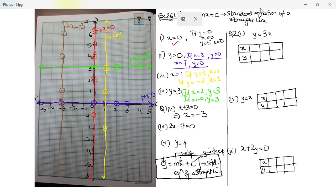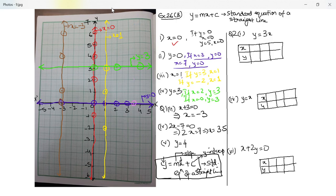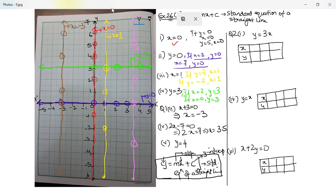Next: 2x minus 7 equal to zero, which means 2x equals 7, so x equals 3.5. Whatever be the value of y, x remains 3.5. A line parallel to the y-axis passing through x at 3.5 — put an arrow and write the equation of the line: 2x minus 7 equal to zero. On one graph you can put many lines to save paper.